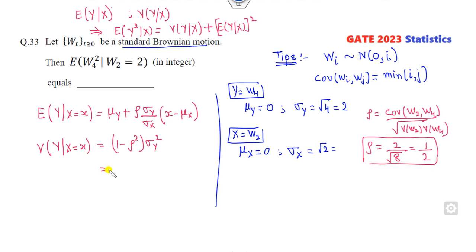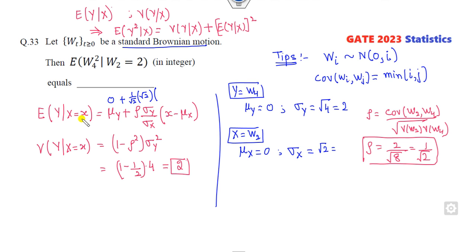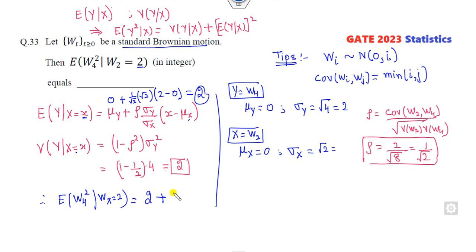Now substitute. The variance of Y given X is sigma_Y squared times (1 minus rho squared) equals 4 times (1 minus 1/2) equals 2. The conditional mean E[W_4 | W_2=2] equals 0 plus (1/root 2) times (2/root 2) times (2 minus 0) equals 2. Therefore E[W_4² | W_2=2] equals variance plus (conditional mean)² equals 2 plus 4 equals 6. The right answer is 6.